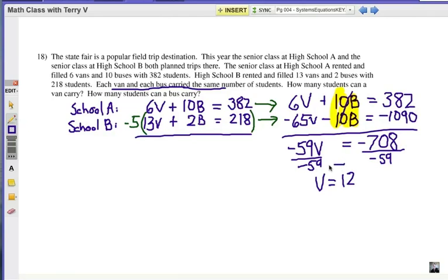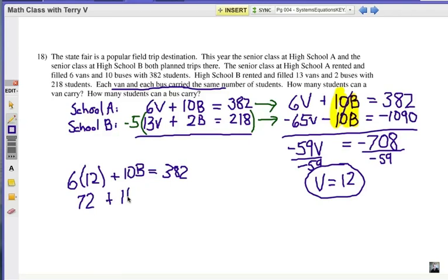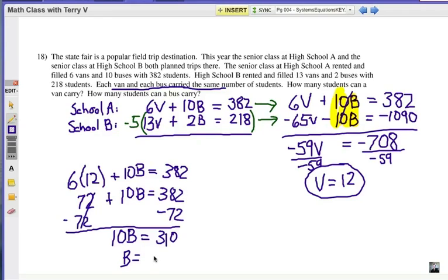12. It's going to be 12 students in each van. Alright, substitute it in to get our second answer. I'm going to use the first equation because it says 6V instead of 13V trying to keep my numbers small here. So 6 times 12 students per van plus 10B from the first equation here equals 382. Alright, that'd be 72 plus 10B equals 382. Subtract 72 from each side. 10B equals 310 and B equals 31. So 31 students in every bus and 12 students in every van.